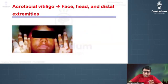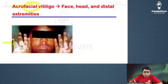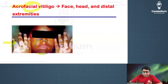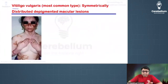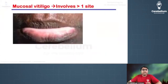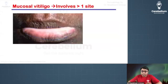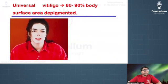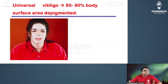In this image you can see acrofacial vitiligo — depigmented macules over the extremities and face. Here you can see vitiligo vulgaris, the most common variety, with symmetrically distributed depigmented macules almost all over the body. In mucosal vitiligo, the mucosa shows whitish discoloration.